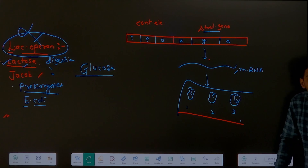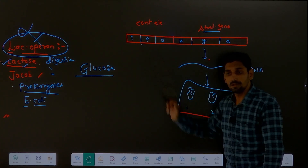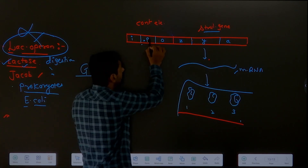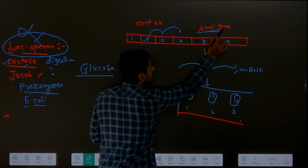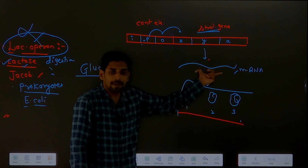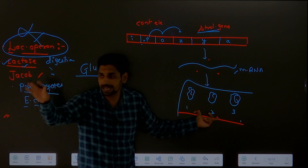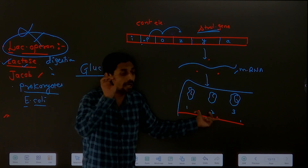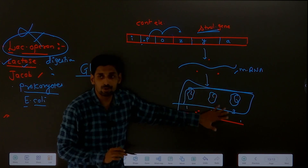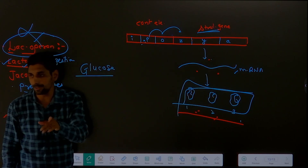When bacteria gets lactose as food, the lac operon will function. The three enzymes will form - because of translation, because of transcription, and because of RNA polymerase. The structural gene Z, Y, A - their transcription will happen, decided by the controlling element. RNA polymerase will bind at the promoter region, then move to operator, then to structural gene, where it will form mRNA, then translation occurs, and three enzymes are produced.